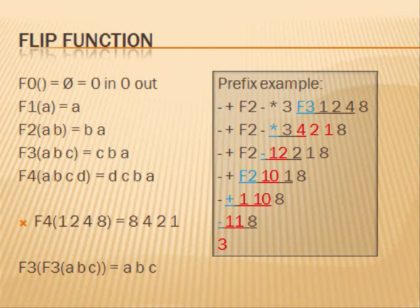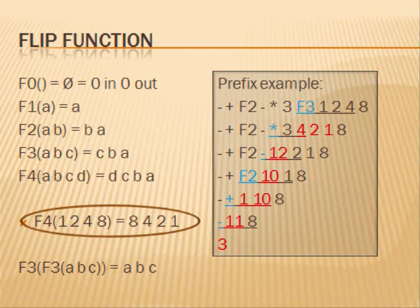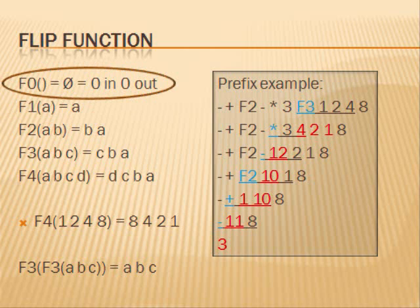Here, I define a kind of function by defining several functions. The letter f stands for flip. The flip of a, b is b, a. The flip of a, b, c is c, b, a. Likewise, the flip of 1, 2, 4, 8 is 8, 4, 2, 1. You can now understand that the flip of a is a. The flip of no elements is no elements — a zero-input, zero-output function.